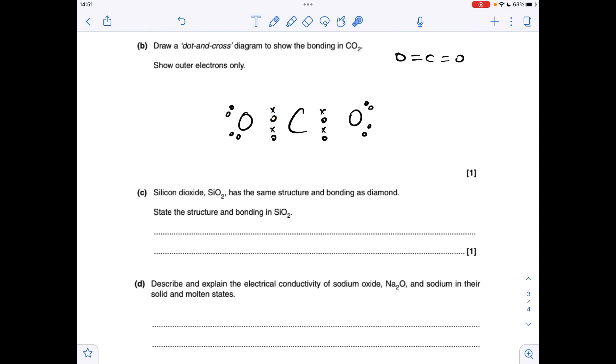Oxygen's in group 6, so it matches that with its electrons, and that leaves two lone pairs on each oxygen. Part C, we're told silicon dioxide's got the same structure in bonding as diamond. Well, hopefully we can remember diamond as a giant covalent lattice structure.